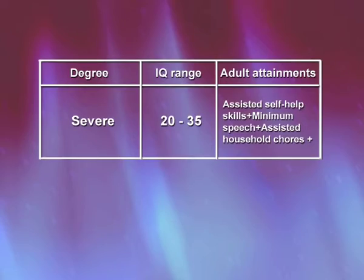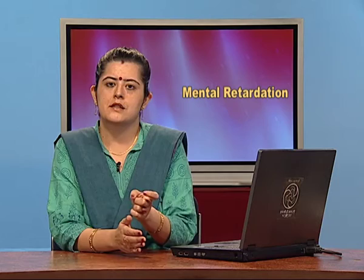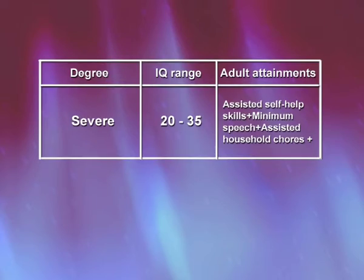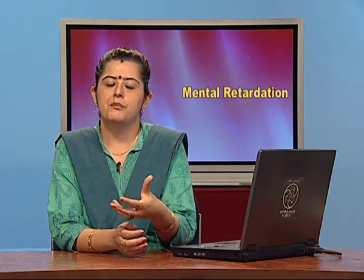The third category is where actual deterioration begins. These people face a lot of problems — academics are not really expected as their capacity is very limited, with an IQ range of 20 to 35. They require a lot of assistance in handling social situations, expressing emotions, and managing vocational tasks such as money transactions, traveling, or time coordination.